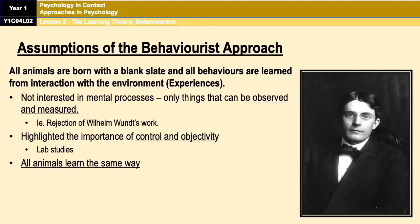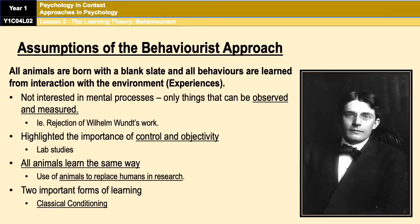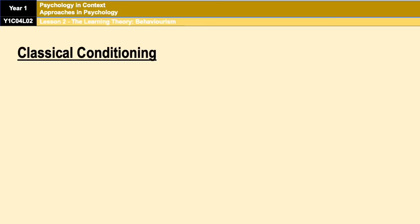They also suggest that humans and animals all learn in the same way, and so they advocate the use of animals in their research, because if it works for a dog, or a rat, or any other animal, then it also works for a human. Finally, all learning occurs via one of two processes: classical conditioning and operant conditioning. And that is where we are now going to start.